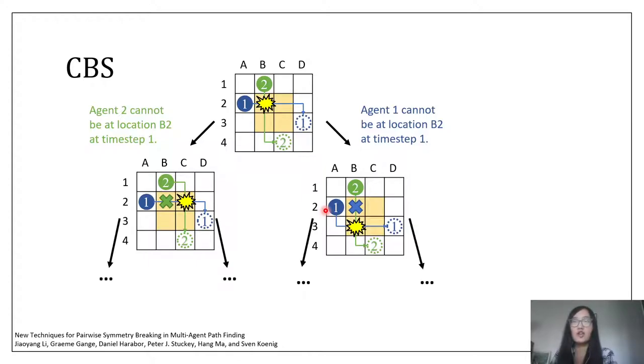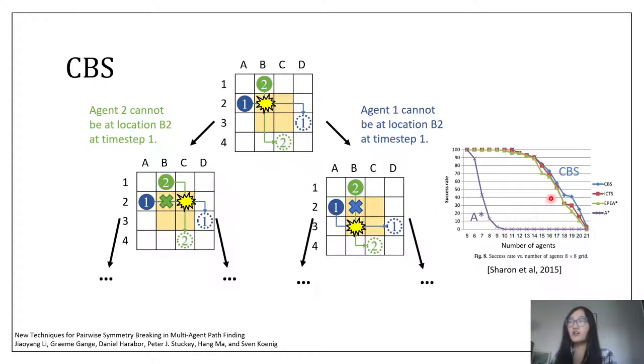If there are still collisions, we branch on these collisions again and repeat this procedure until we find collision-free paths. This is a very simple idea, right? But it's already shown that this idea works much faster than A-star. So in this figure, the x-axis is the number of agents, and the y-axis is the success rate, which is the solved instances within the time limit. We can see that CBS has a much better success rate than A-star.